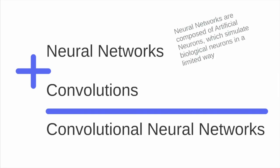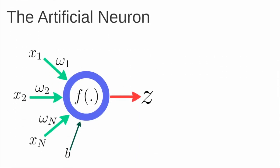Recalling the concept, neural networks are composed of artificial neurons which simulate biological neurons in a limited way. Let's take a look at the artificial neuron. What we have here is a set of elements represented by the inputs X1, X2 up to Xn which are connected to F.